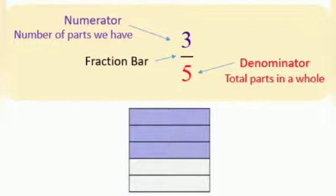Three by five: the numerator is three, the number of parts we have, and the denominator is five, the total parts in a whole.